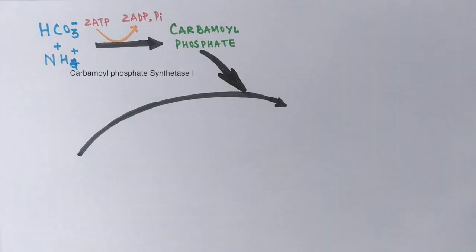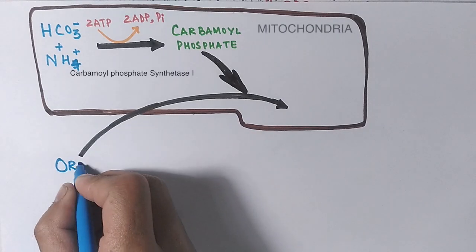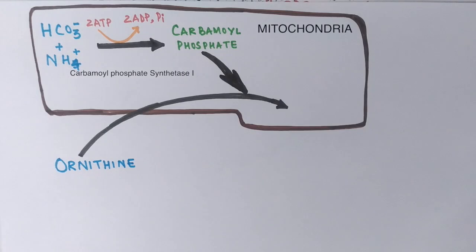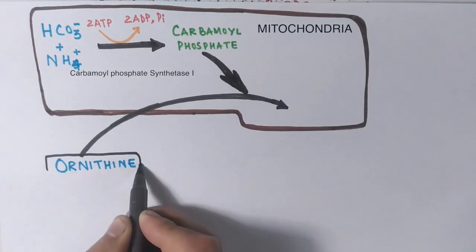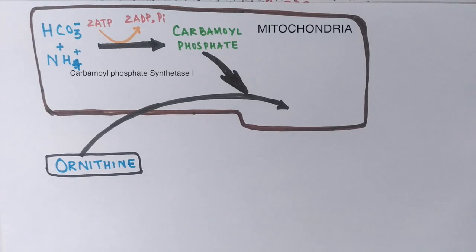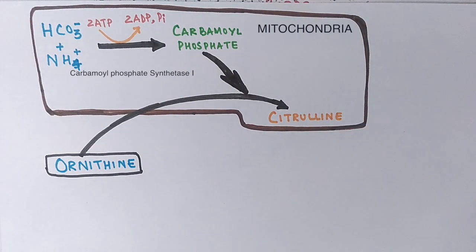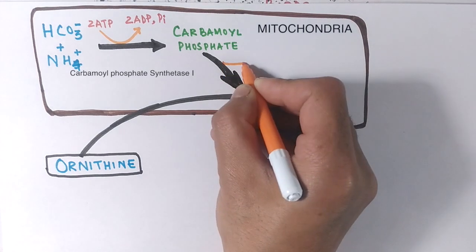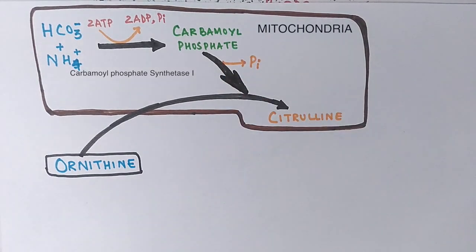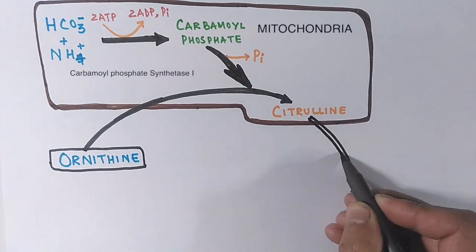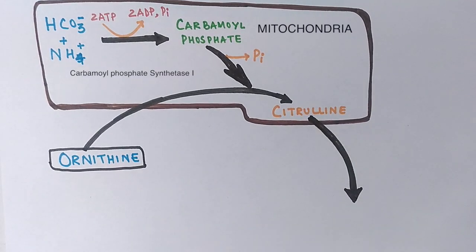After that, ornithine from the cytosol enters the mitochondria, where it reacts with carbamoyl phosphate to form citrulline. The citrulline then passes into the cytosol, where the next three steps of the cycle take place.